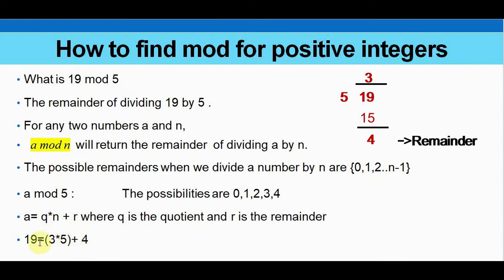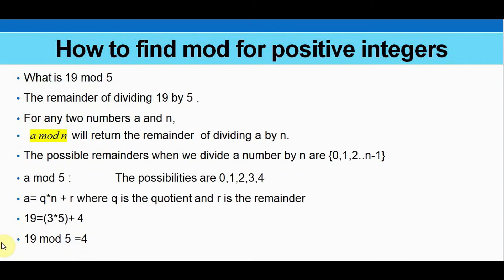So q is our quotient 3 multiplied by n which is 5, and we get the remainder as 4. So in this way, we got 19 mod 5 is 4. This also can be represented in terms of congruence. So we get 19 congruent to 4 mod 5.